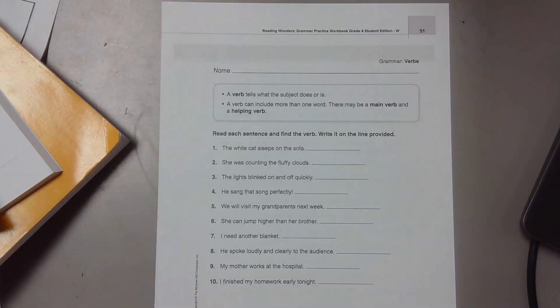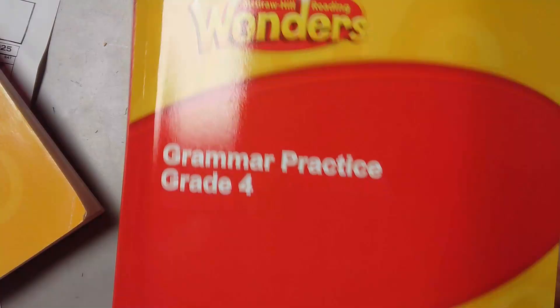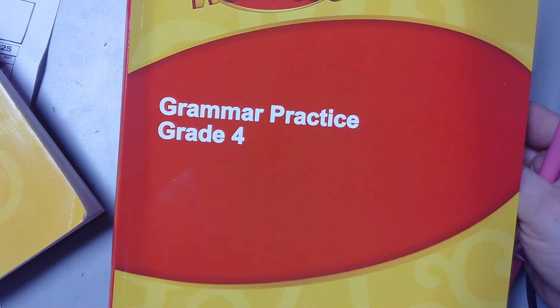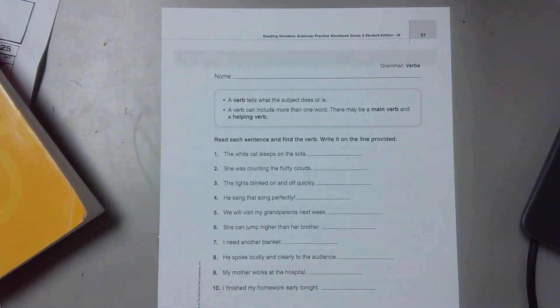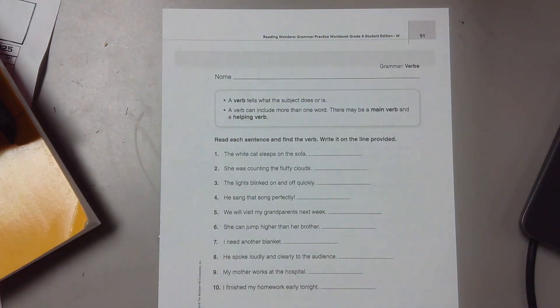Look at page 51 in our grammar practice workbook, grade four. This is the Wonders McGraw-Hill workbook and we're going to look at verbs today. It says a verb tells what the subject does or is. A verb can include more than one word. There may be a main verb and a helping verb.